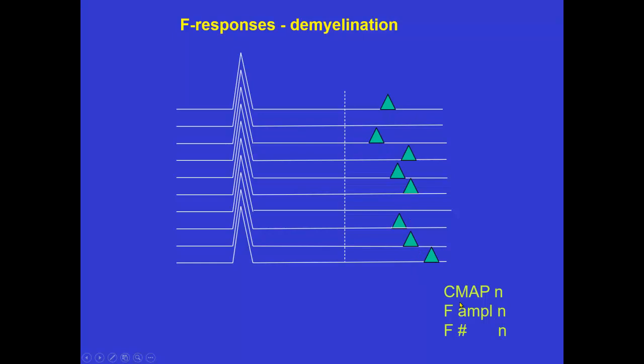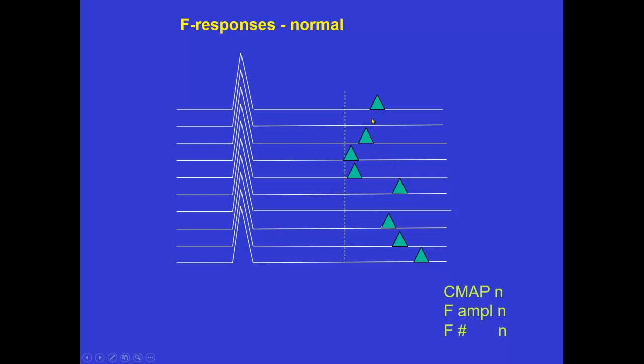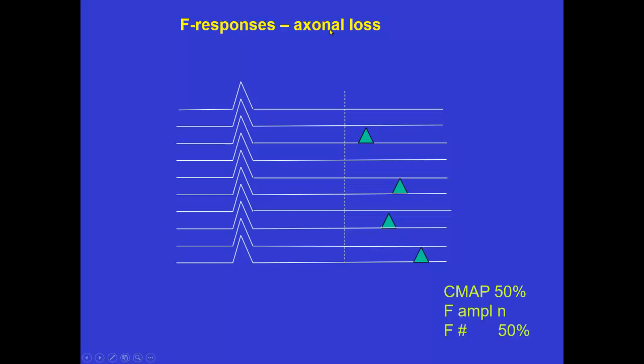So in demyelination, CMAP amplitude and F amplitude are normal and persistence is normal, but the latency is increased. When it comes to conduction block, the CMAP, depending on the position of the block, is normal, but we have fewer F-responses. So the CMAP is normal, F amplitude of those that occur is normal, but we have a reduced persistence.